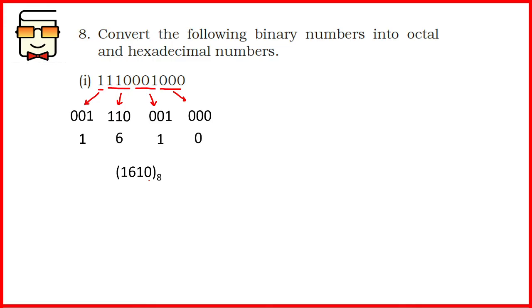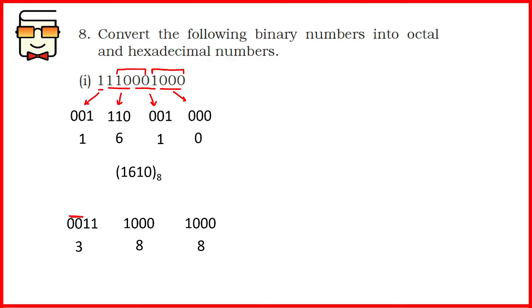Now we do the hexadecimal conversion for the same question. Grouping in groups of 4 from right to left, we get only three groups and add two zeros to the leftmost group. We write the hexadecimal values for each binary group and combine them as a single hexadecimal number. Please be careful with the base values you mention and what the question is asking you to do.